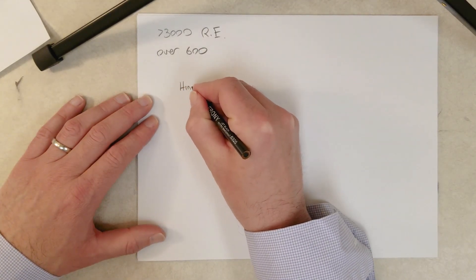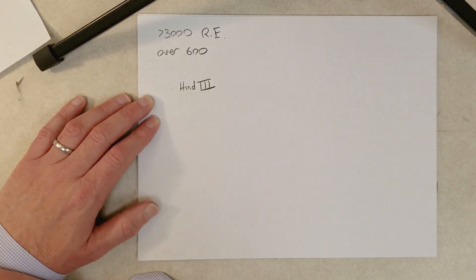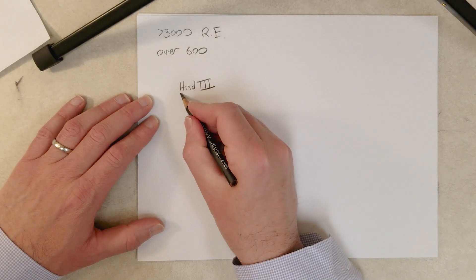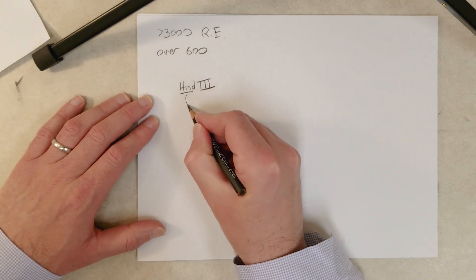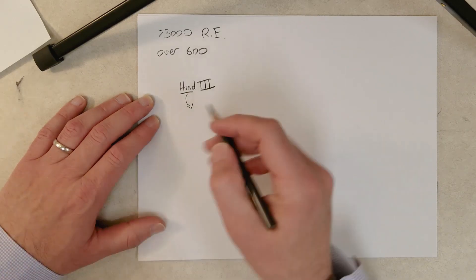So they have names like this. HindIII is a popular restriction endonuclease. The name, the first three letters usually come from the bacterium that possesses the enzyme in nature.